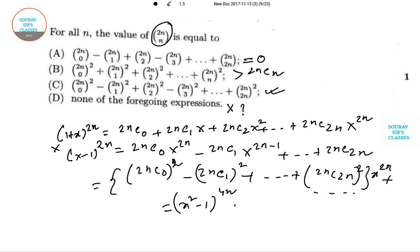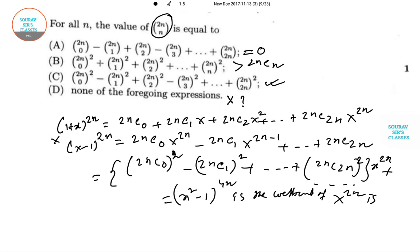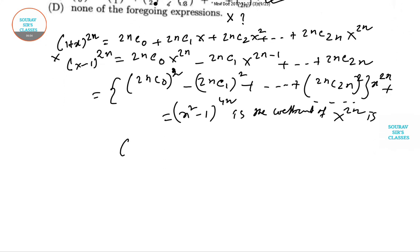The coefficient of x to the power 2n is (-1)^n times 4nCn. Hence if we just check, this is also not coming, so none of the following expressions match. Option D is the correct answer. We will do some more in the next video. Thank you.